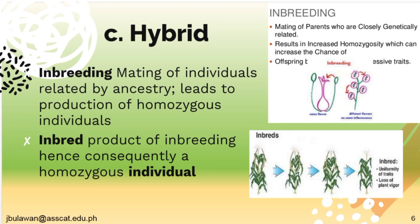We have inbreeding — the mating of individuals related by ancestry, which leads to the production of homozygous individuals. Inbreeding is the mating of parents who are closely genetically related and results in increased homozygosity, which can increase the chance of offspring having recessive traits. An inbred is the product of inbreeding, hence a homozygous individual. The result of inbreeding is uniformity of traits, which causes the loss of plant vigor.